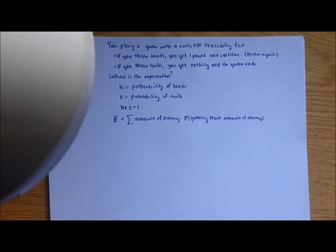Now you have to recall the definition of expectation. I've written it down here. The expectation is defined to be the amount of money that you can get in some case, times the probability of getting that amount of money, and you sum it for each possible outcome. So in this case, the outcomes will just be the amount of money you get, and that's going to be in integers.